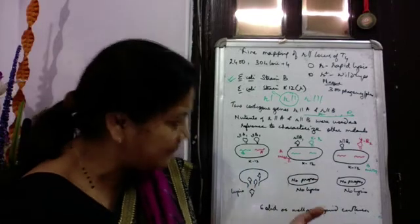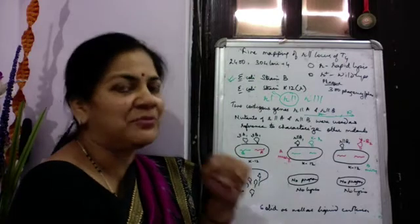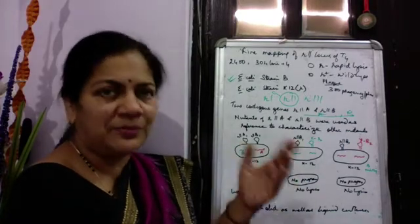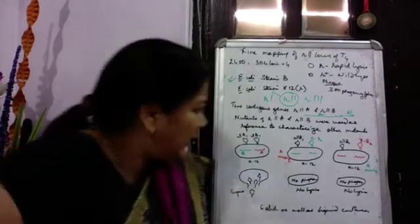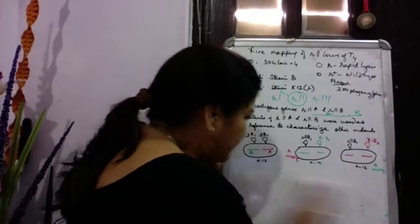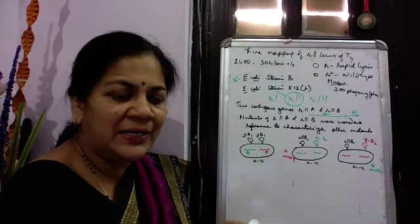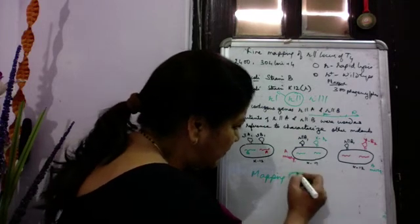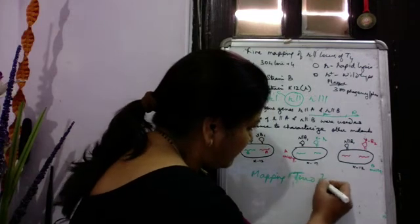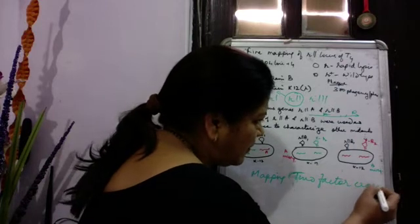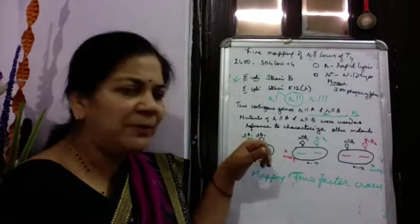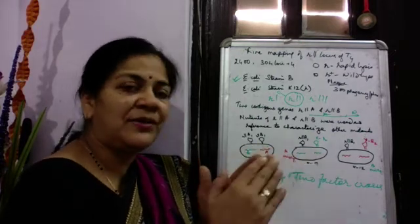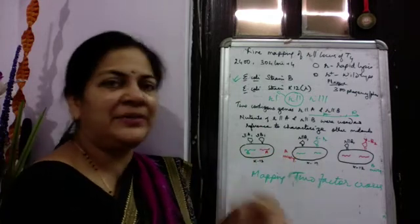Characterizing 2,400 mutations at once is very tedious, so Benzer devised a faster deletion mapping strategy. Before discussing that, the current strategy allows mapping by two-factor crosses. Using complementation analysis one can categorize mutants into A or B, but within A there are several mutants, so recombination analysis is needed to find the distances between them.